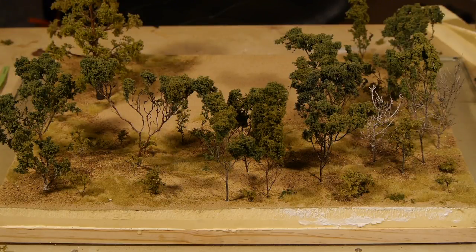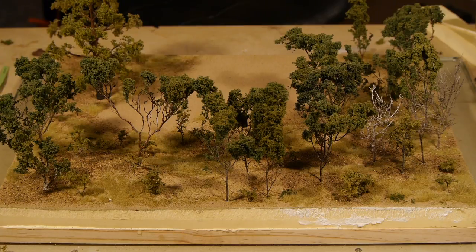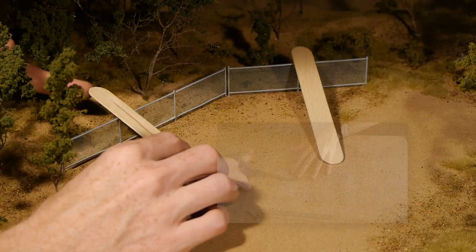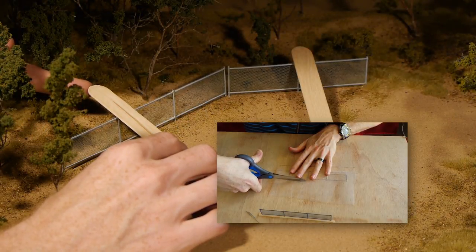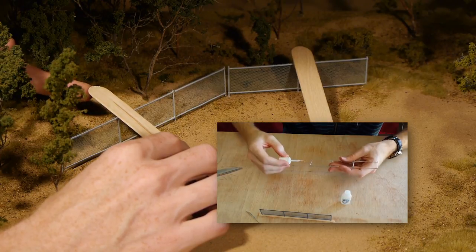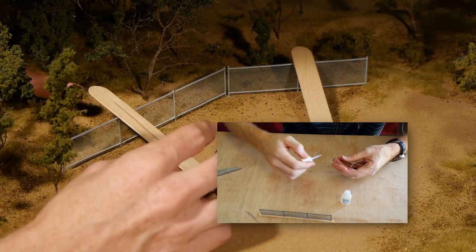For smaller shrubs and bushes I use Woodland Scenics fine leaf foliage. This chain link fence is from one of my earlier tutorials. It's very easy to make and looks fantastic. Check out the link here to go and have a look.